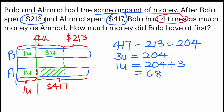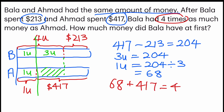Once I'm done, I can straight away find out the amount of money that Bala has. I can also find out Ahmad — it's easier because it's one unit plus $417. So $68 plus $417 gives us $485. And that's my final answer.